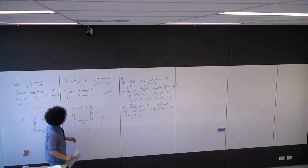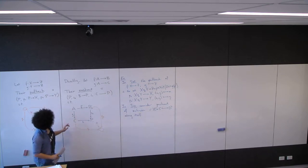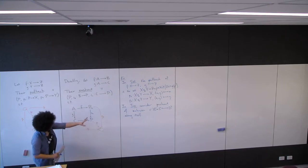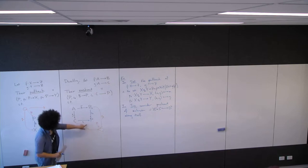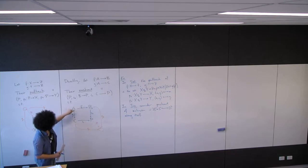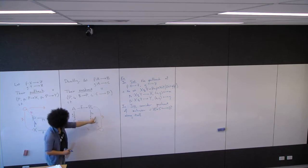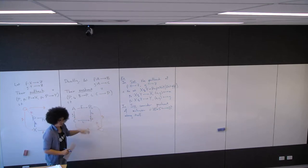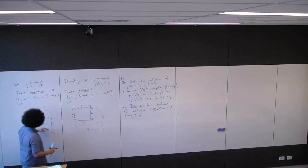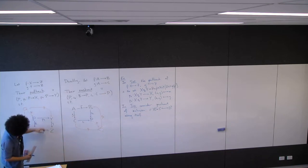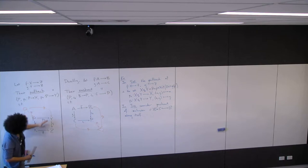When talking about pushouts or pullbacks, this map is the pushout of f along g, and similarly this map is the pushout of g along f. The same with pullbacks: this map means I'm pulling f back along g, and this map means I'm pulling g back along f.